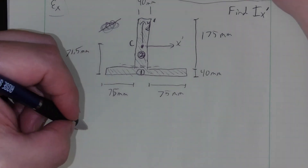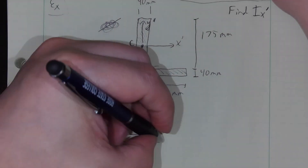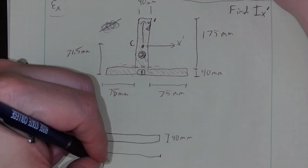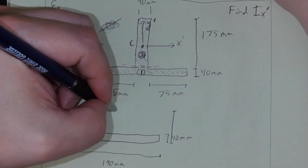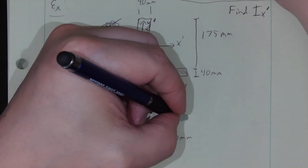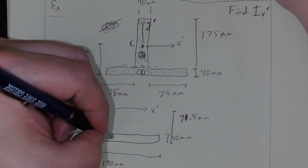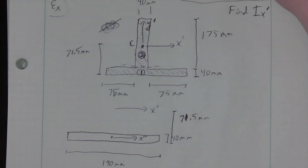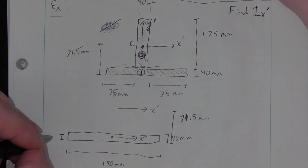Looking at shape one: it is 190 millimeters wide and 40 millimeters tall, and the X prime axis is 71.5 millimeters up from the bottom. This shape has its own centroid — let's call it X double prime — which is in the middle of this rectangle, 20 millimeters up from the bottom.